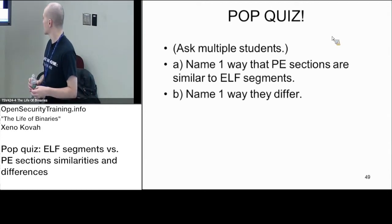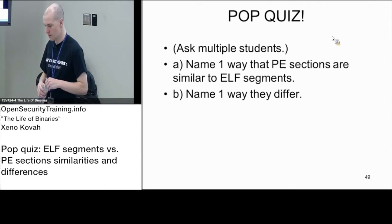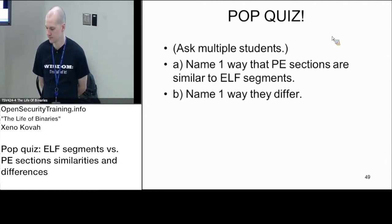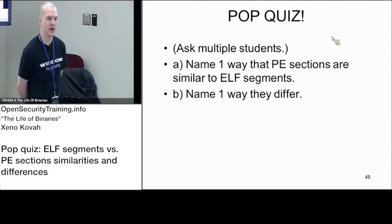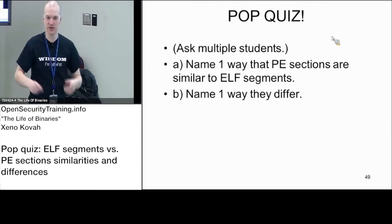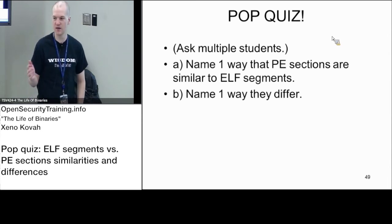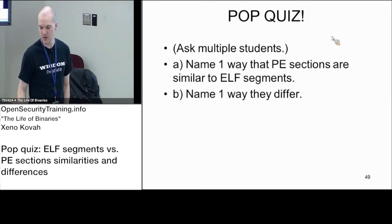A similarity is that a lot of the section names and contents are the same, such as .text, .data, and .bss. We haven't seen sections exhaustively yet, but when we showed the segment-to-section mappings with the readelf -l command, you saw .text, .data, .rdata, and things like that. So the section names are similar — good answer.